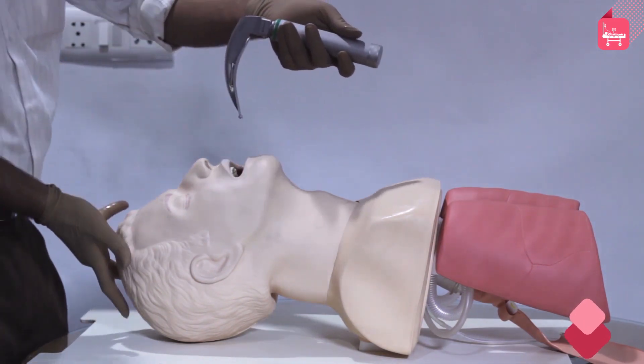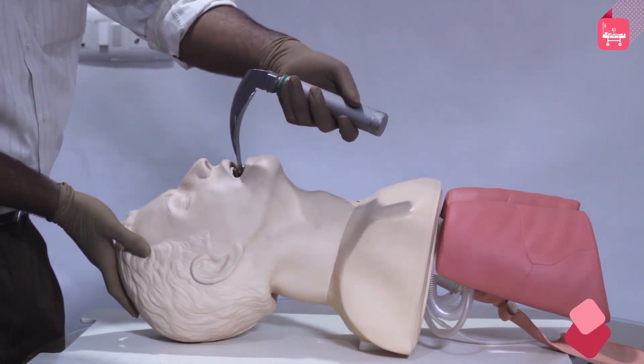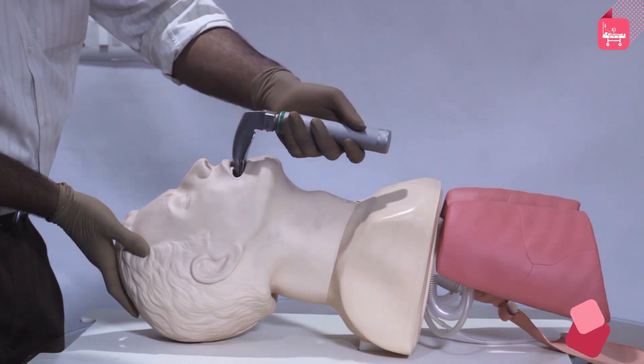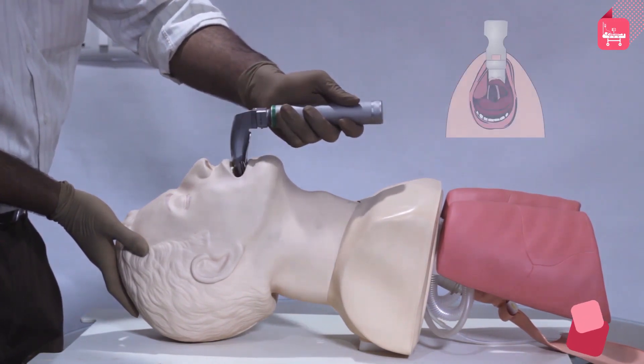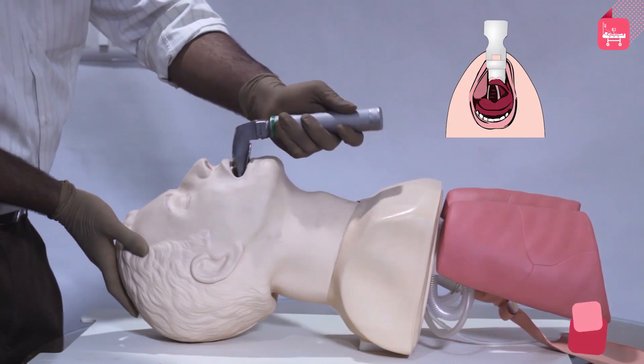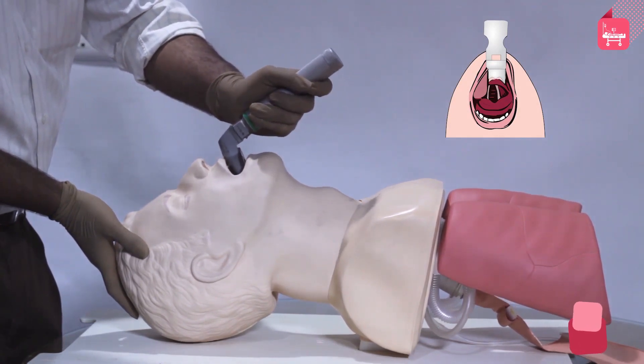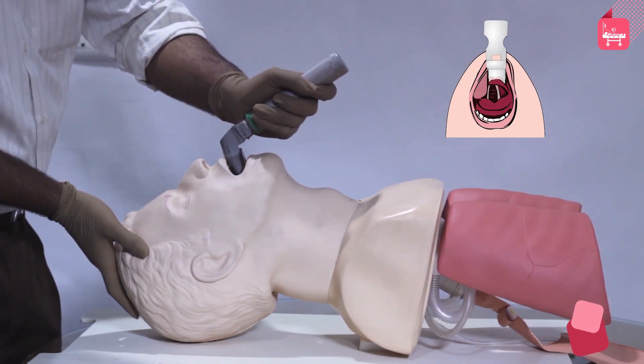Hold a laryngoscope in the left hand and introduce the blade of the laryngoscope carefully into the right side of the mouth, avoiding contact with the teeth and lips. Advance the laryngoscope towards the right tonsillar pillar. Once the right tonsillar fossa is visualized, move the blade to the midline, sweeping the tongue left.